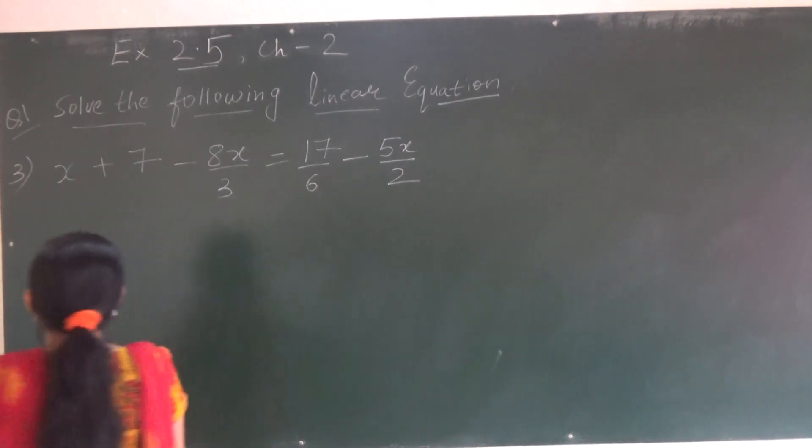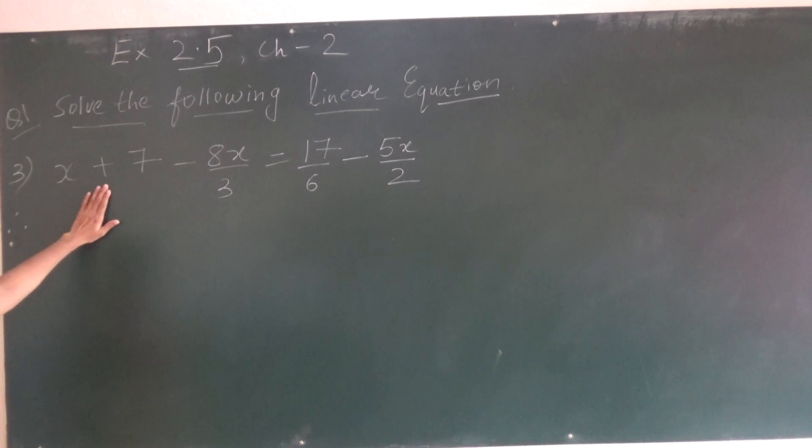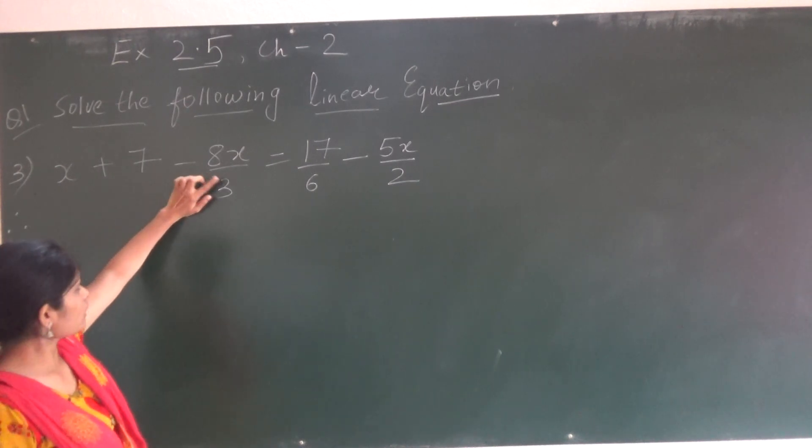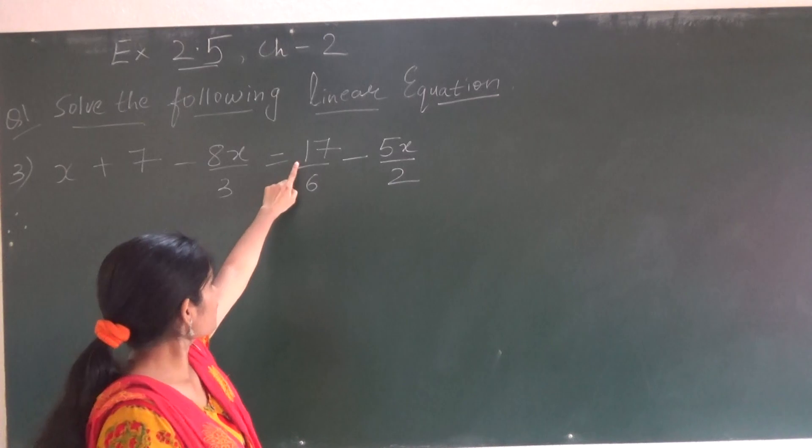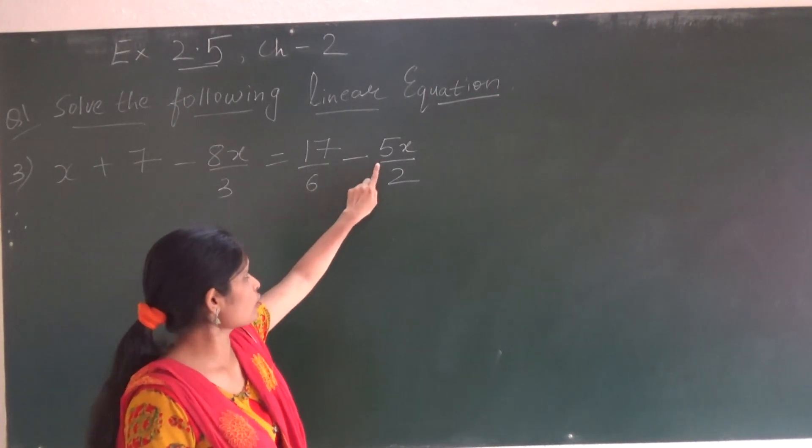Now we will see third sum. Let us first see the question. The question is x plus 7 minus 8x upon 3 and that is equal to 17 upon 6 minus 5x upon 2.